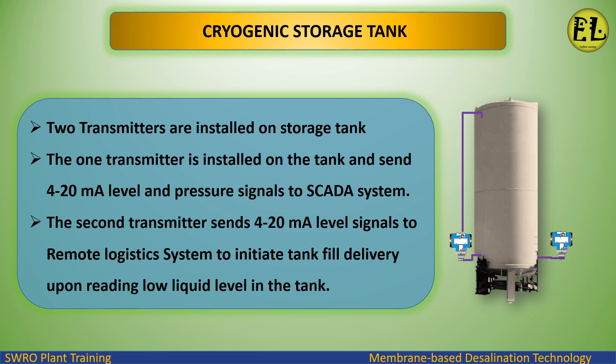Two transmitters are installed on each storage tank. The first transmitter sends a 4 to 20 milliampere level and pressure signal to the SCADA system. The second transmitter sends a 4 to 20 milliampere level signal to the remote logistics system to initiate tank fill delivery upon reading a low liquid level in the tank.